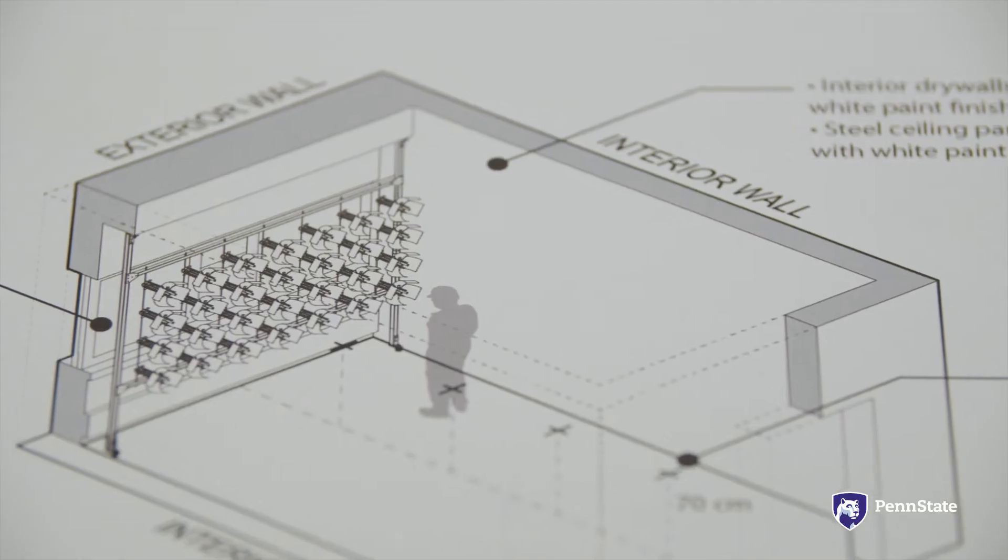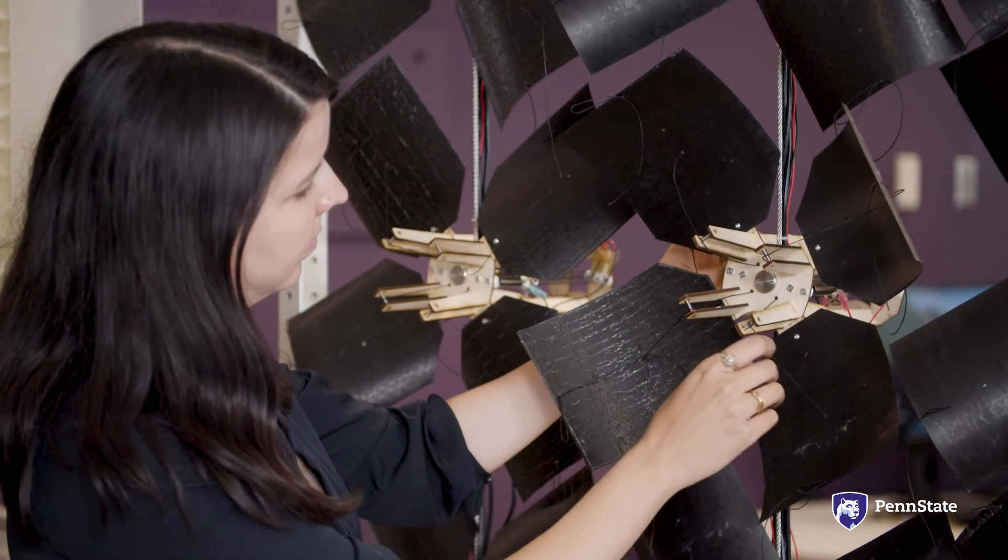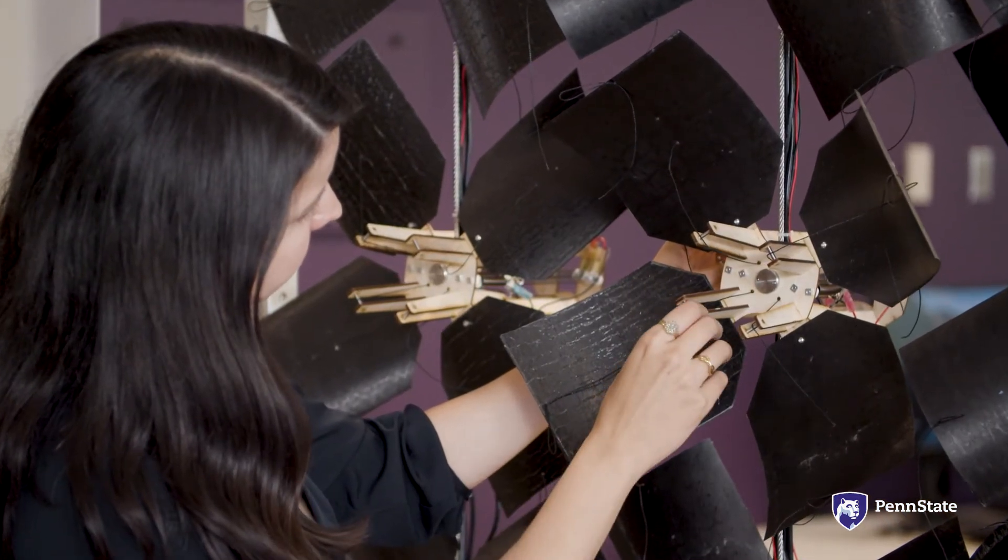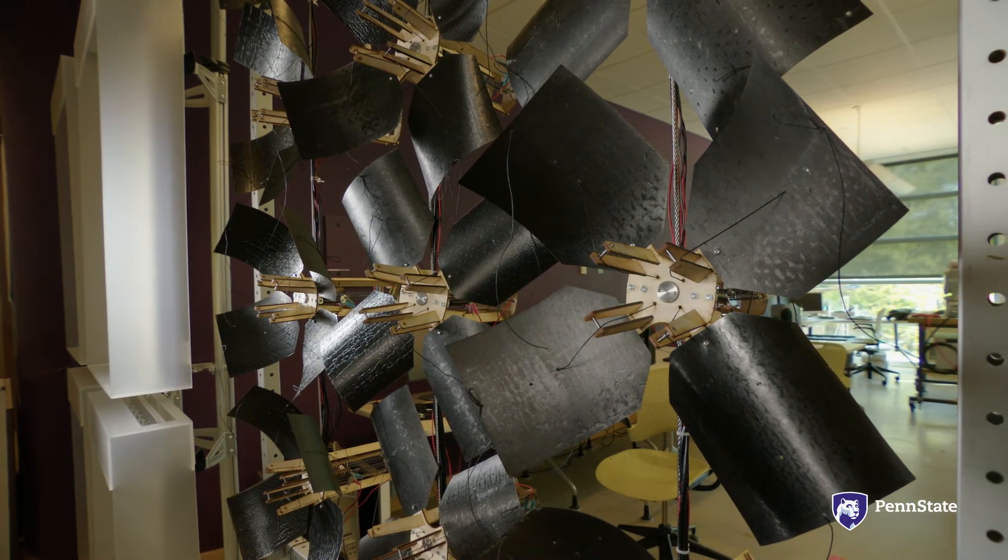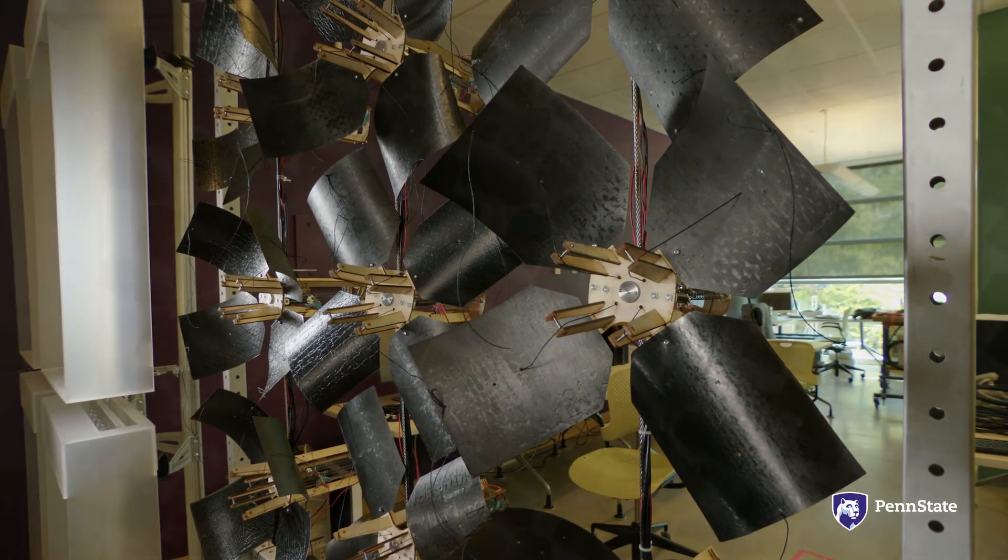There are materials that act as a device or a system. So these materials will tilt and move and bend in order to protect the inside from the outside. So systems like this can be incorporated in the design of future buildings, and this is just the beginning.